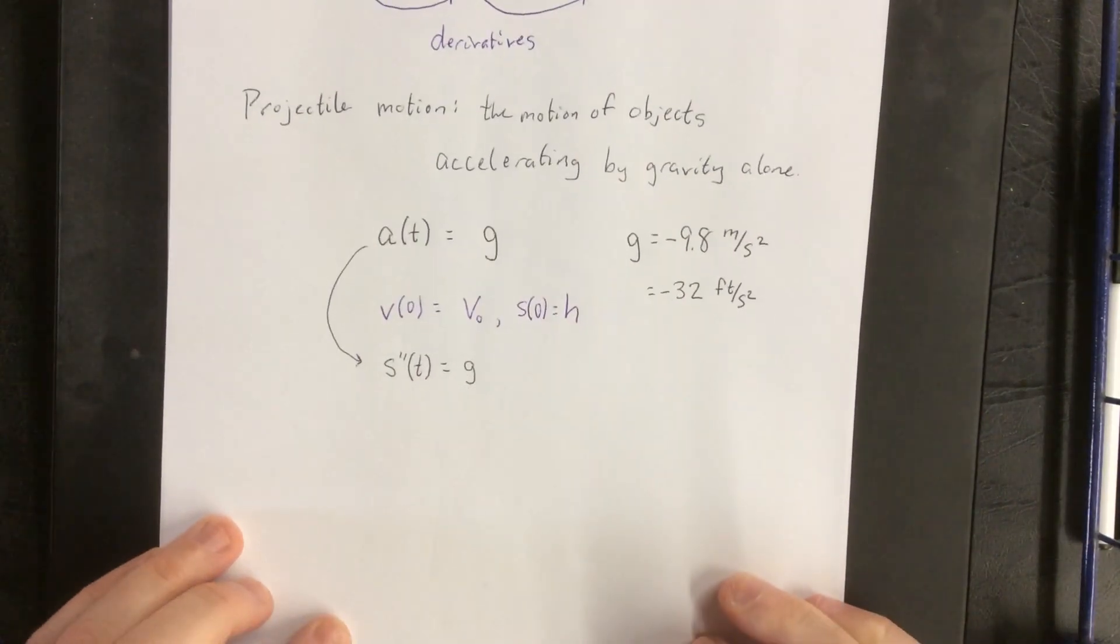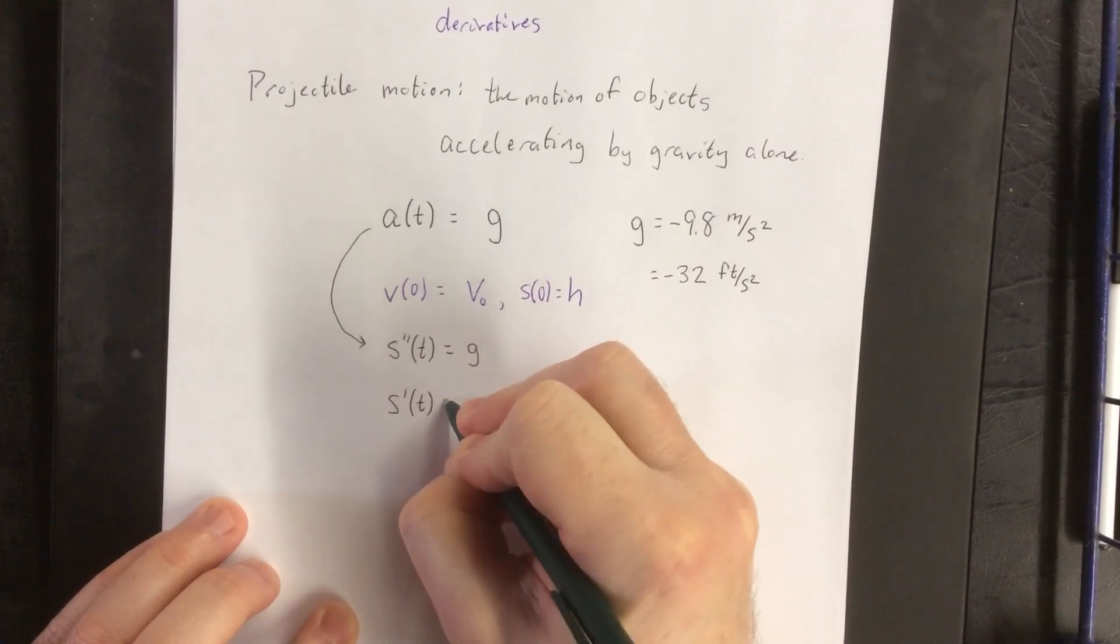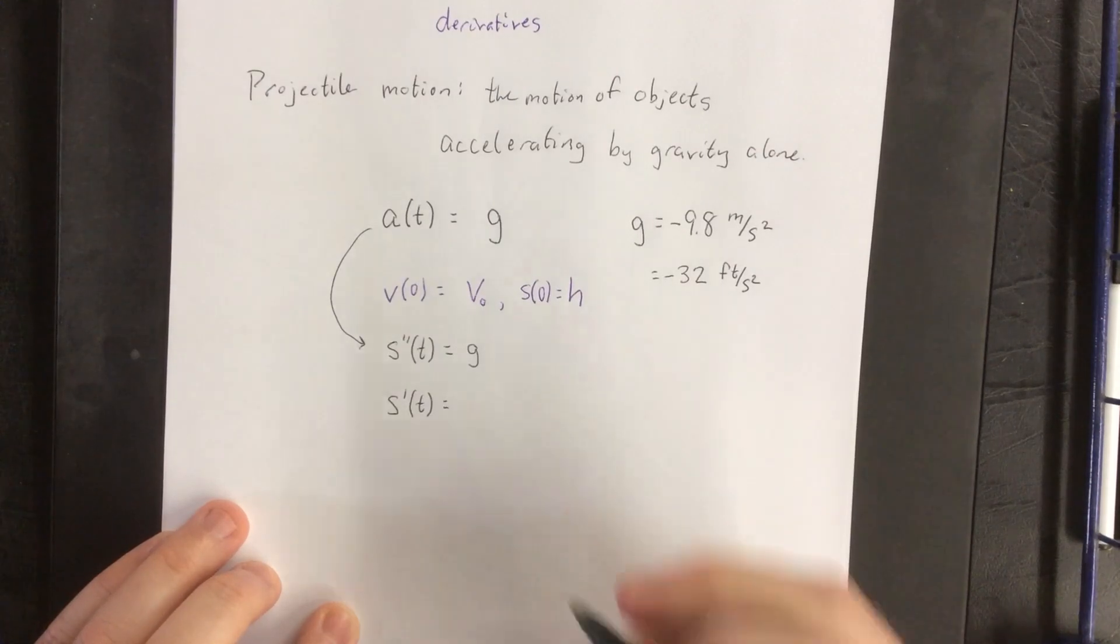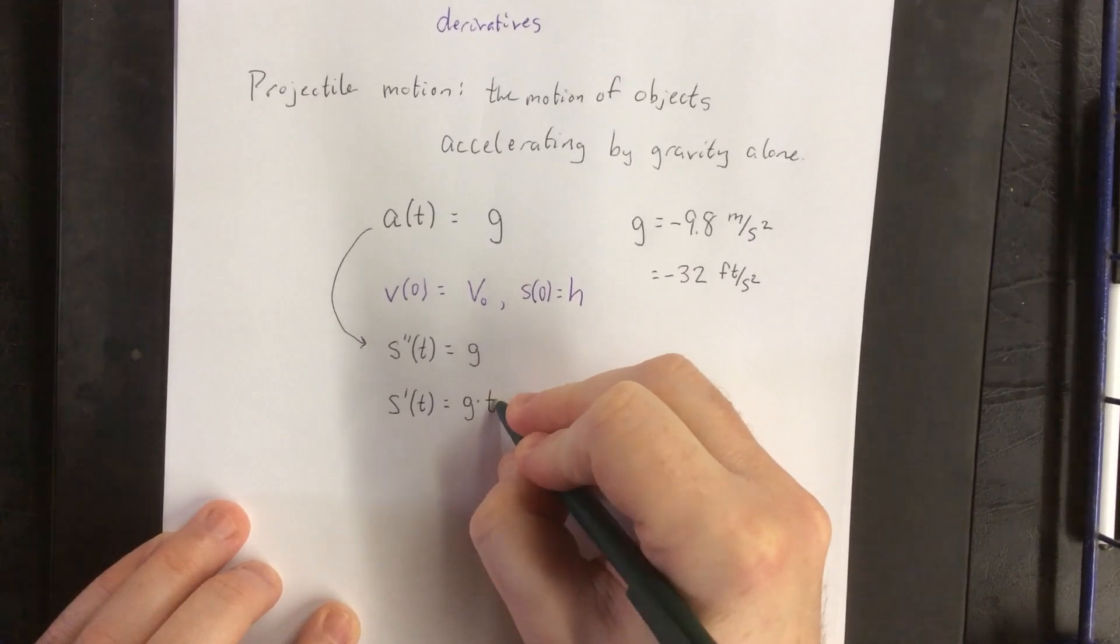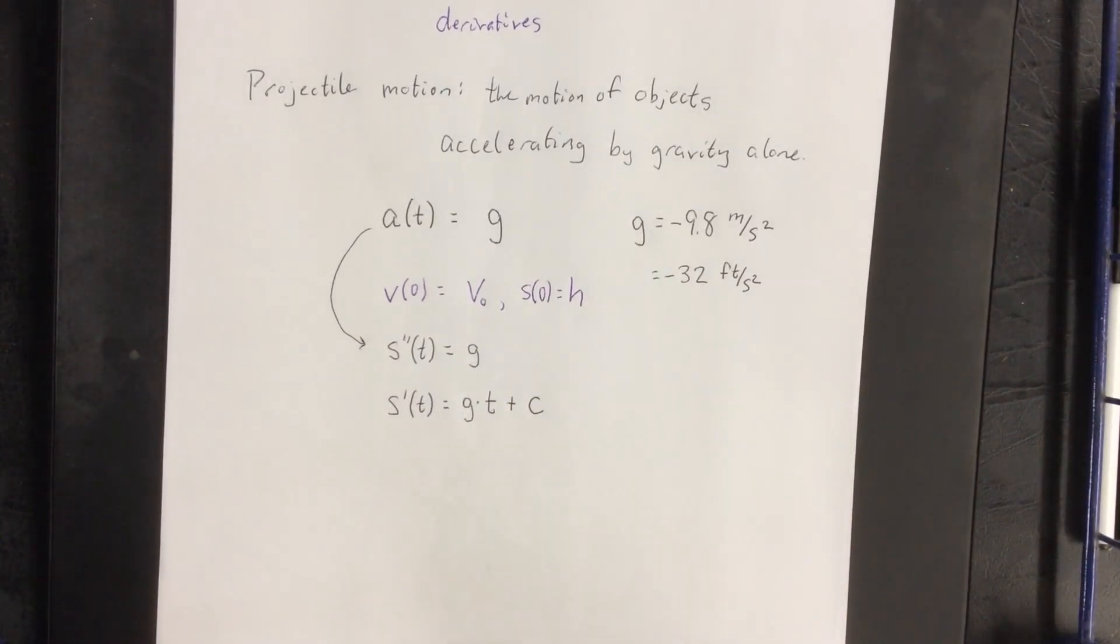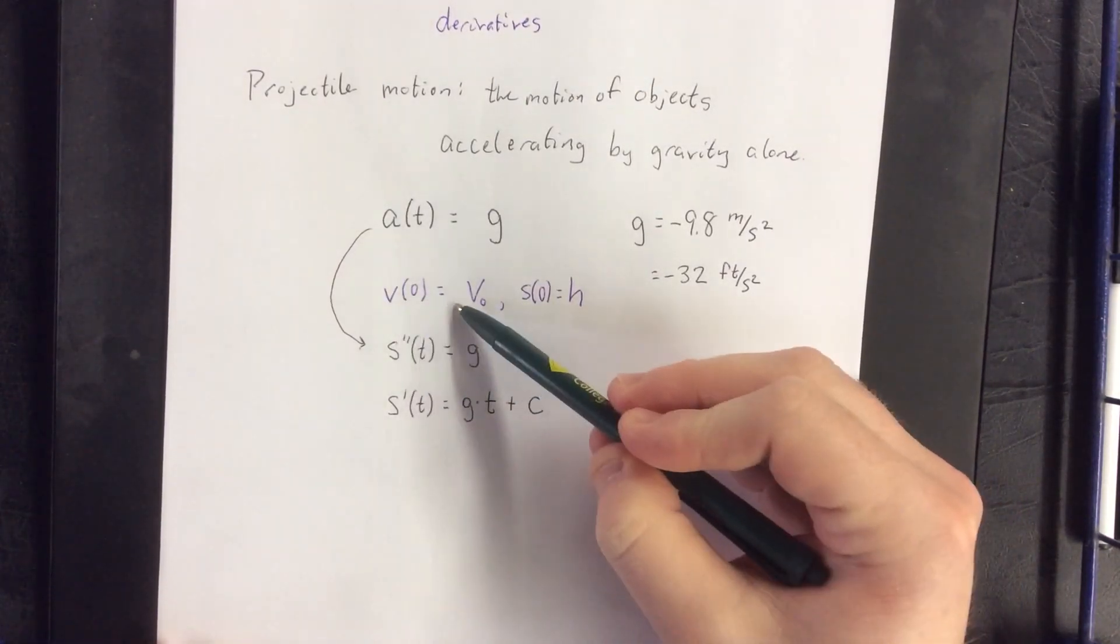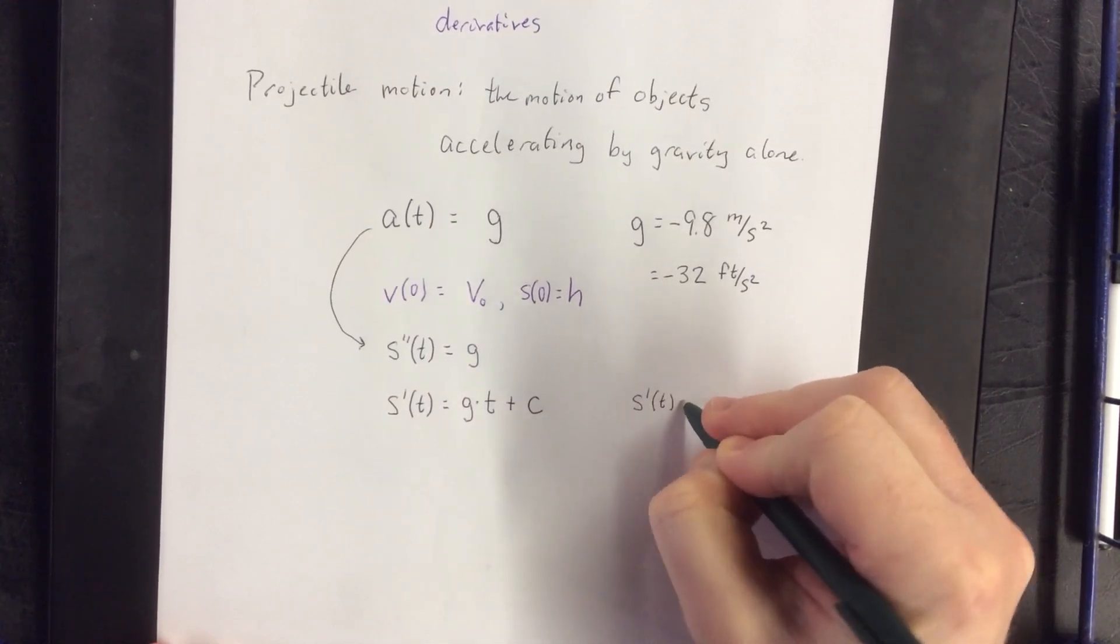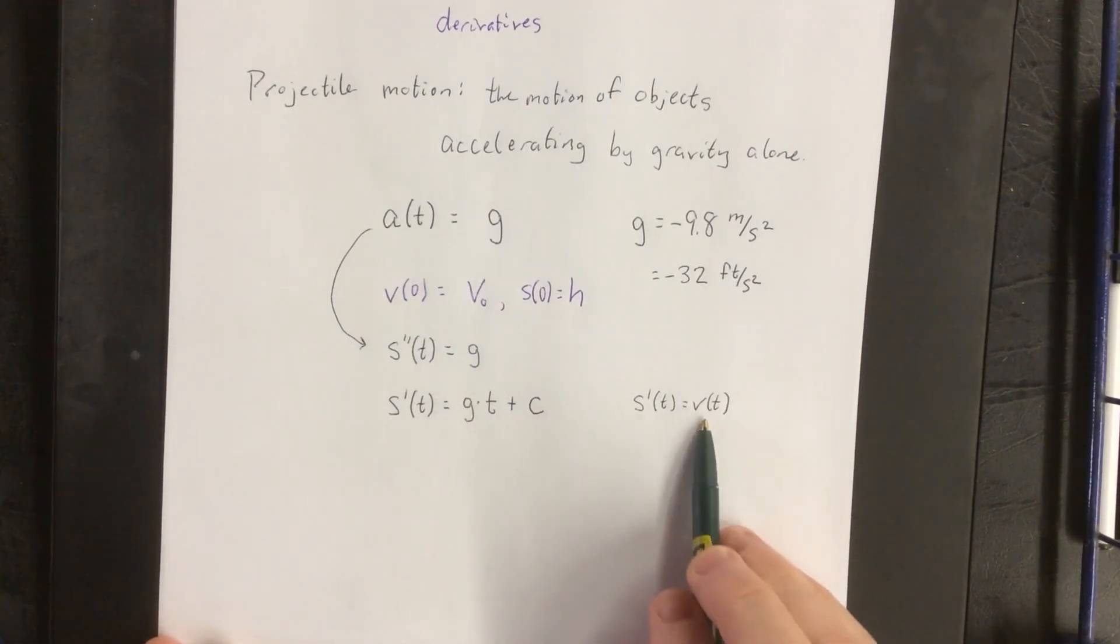So taking an antiderivative will take us to s prime of t. Now acceleration due to gravity is a constant, therefore it'll be the constant times whatever the variable happens to be. In this case that would be t, plus whatever our constant of anti-differentiation is. Then we can plug in our first initial condition that v of 0 is equal to v naught. So do keep in mind that when I say s prime of t, I am referring to v of t. That's the derivative of position is velocity.